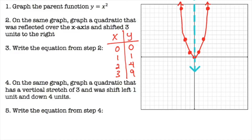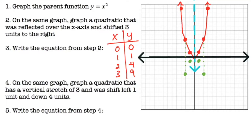On the same graph, we need to graph a quadratic reflected over the x-axis and then shifted three units to the right. First, flip the graph over the x-axis. Take the red points next to the vertex and flip them over the x-axis — the points that are four units above the x-axis get counted four units down. Do the same for the outer points, then draw your reflected parabola. You count the spaces from each point to the x-axis and mirror those same spaces on the other side.